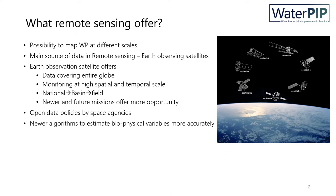Because the main source of data used in remote sensing-based applications — in this case water productivity assessment — are coming from Earth observing satellites. These Earth observing satellites are continuously monitoring our Earth's surface, both land and water from space, and they cover the entire globe, offering periodic data depending on each satellite type. This is a very big opportunity in establishing monitoring systems, enabling monitoring at high spatial and temporal scale.